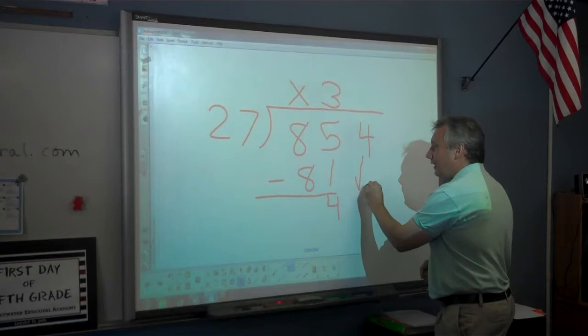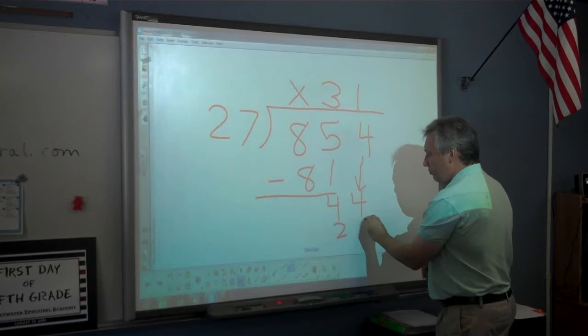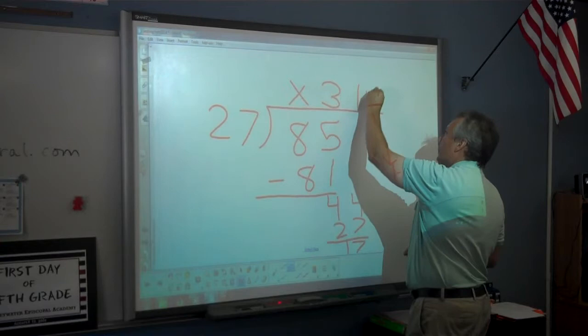We bring down the next number. 27 goes into 44 one time. 1 times 27 is 27. 17. And since we have no other numbers to bring down, that is the remainder.